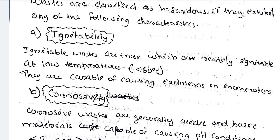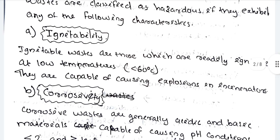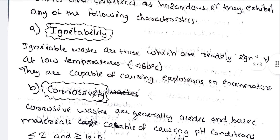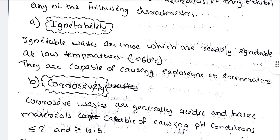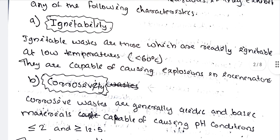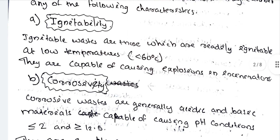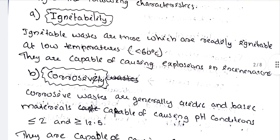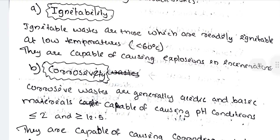Ignitable wastes are those which are readily ignitable at low temperatures, less than 60 degrees Celsius. They are capable of causing explosions. Incineration is the process of heating in the absence of air — heating at less than 60 degrees Celsius.